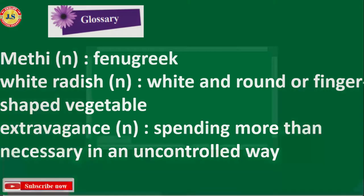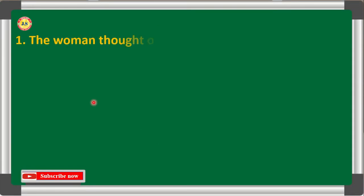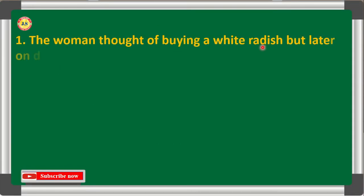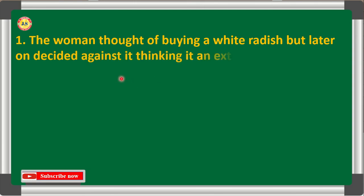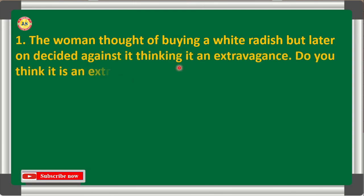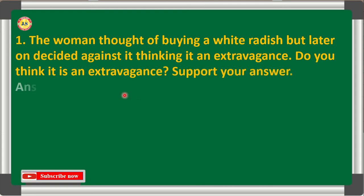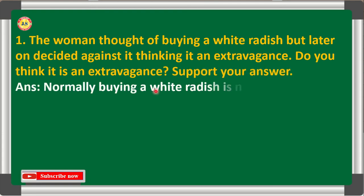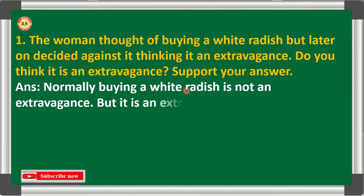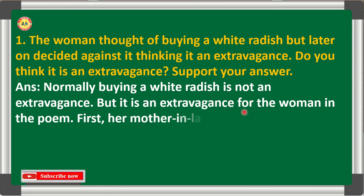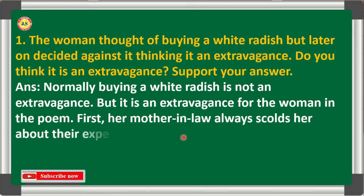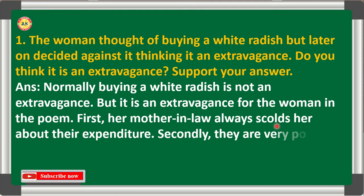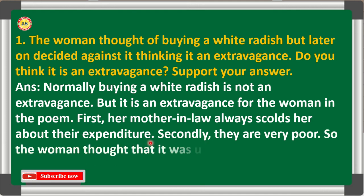Question 1: The woman thought of buying a white radish but later decided against it, thinking it is an extravagance. Do you think it is an extravagance? Answer: Normally buying a white radish is not an extravagance, but it is an extravagance for the woman in the poem. First, her mother-in-law always scolds her about expenditure. Second, they are very poor, so the woman thought it was unnecessary expenditure.